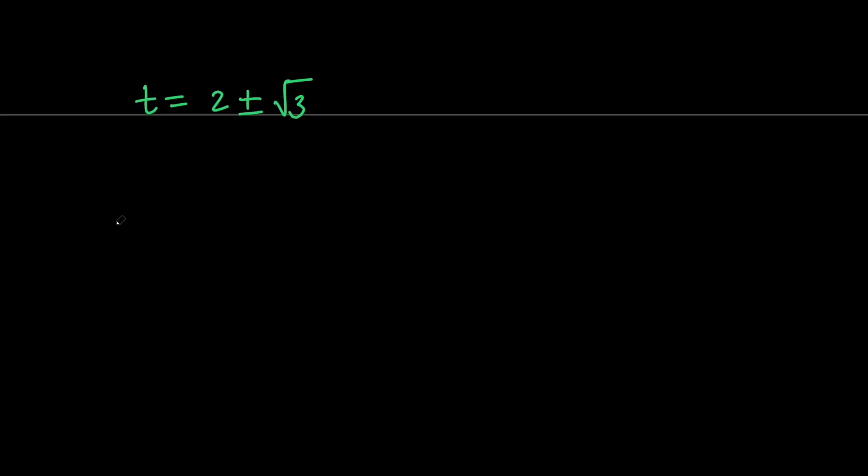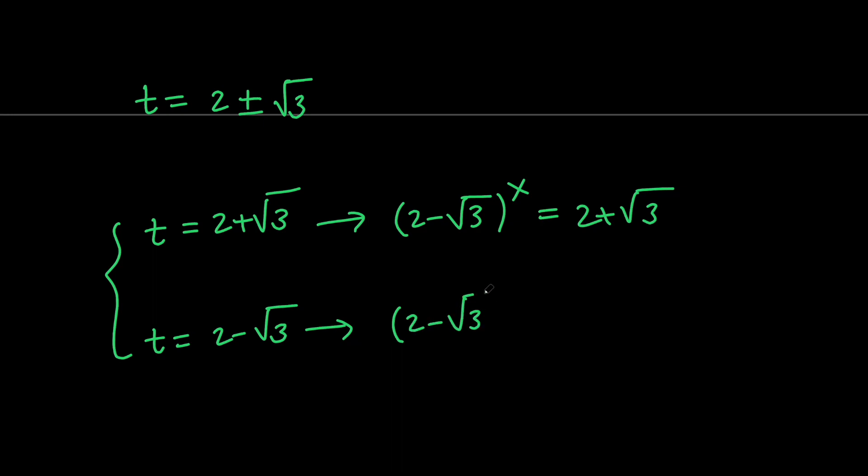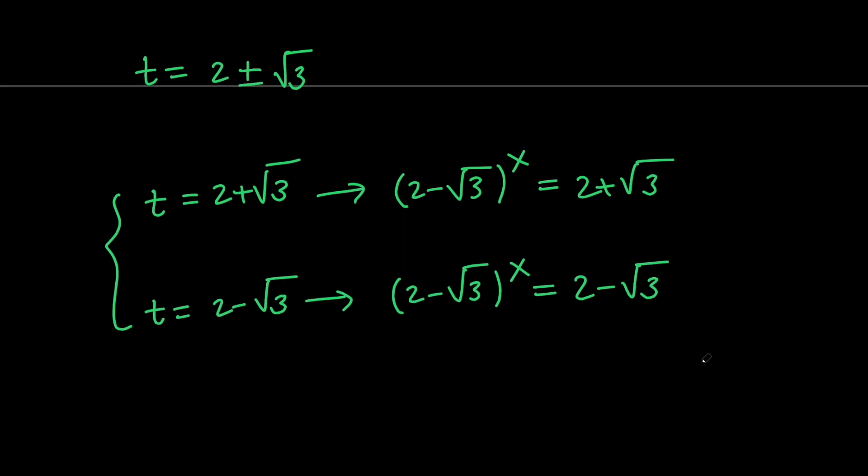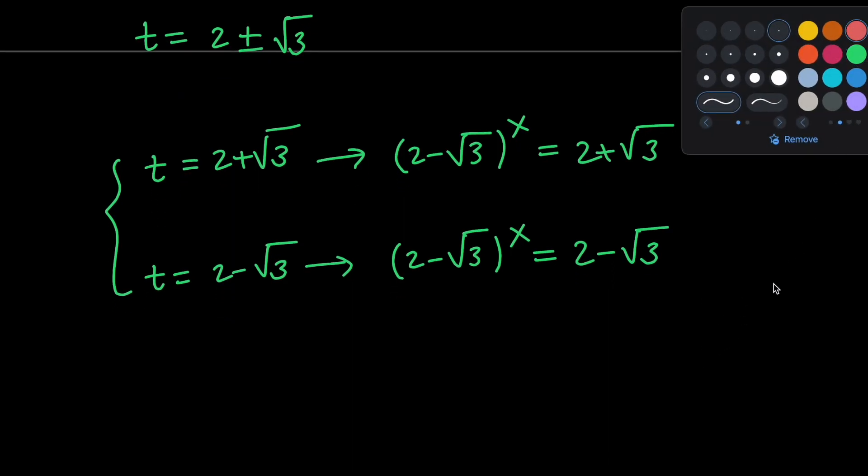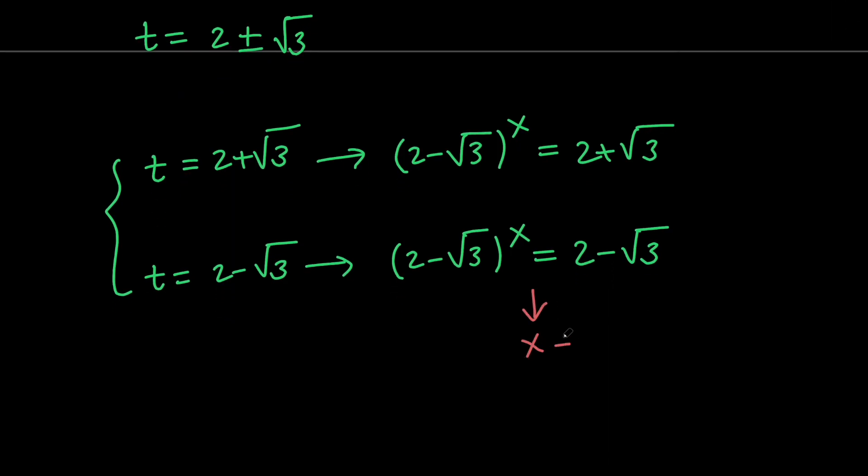So, if t equals 2 plus root 3, then you will have 2 minus root 3 to the x power equals 2 plus root 3. And if t equals 2 minus root 3, we're going to have 2 minus root 3 to the x power equals 2 minus root 3. Obviously, from the second case, we're going to get x equals 1.